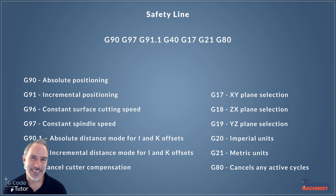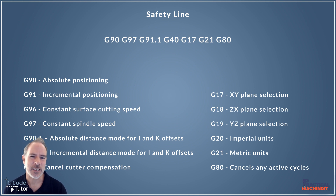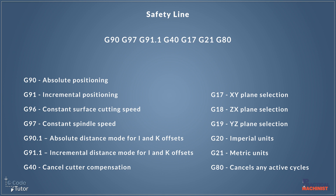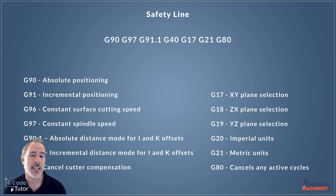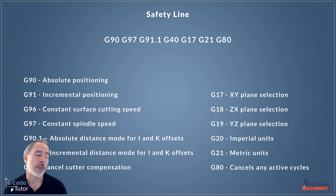This feeds nicely into the next problem we may face. When we're programming our safety lines — here is an example of my safety line — you can see that I have G91.1 right there to make sure that the radiuses behave as expected. I also have G40 and G80 on that safety line. G40 cancels any cutter compensation, and G80 cancels any active cycles. I put this line at the beginning after each tool change so the machine is always in a default state, meaning I can jump into the program at any point and run any tool knowing compensation is cancelled and there are no active cycles.